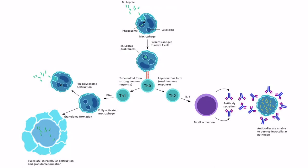First, the pathogen enters the host — we can see Mycobacterium leprae at the top of the image. It's thought that this occurs through respiratory droplets, but it may also occur through the skin. The organism enters the host, is engulfed by a macrophage, and then the antigen is presented to naive T-cells. The pathogen continues to proliferate intracellularly because a macrophage is unable to successfully eliminate the pathogen until it's fully activated by a proper immune response.